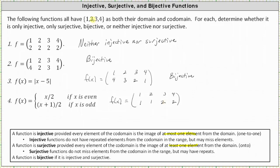In this case, notice all the elements from the codomain are not in the range, and therefore the function is not surjective. Surjective functions do not miss elements from the codomain in the range. The function is also not injective because the elements one and two from the codomain are repeated. Injective functions do not have repeated elements from the codomain in the range. Because the function is not injective and not surjective, we say it's neither injective nor surjective.